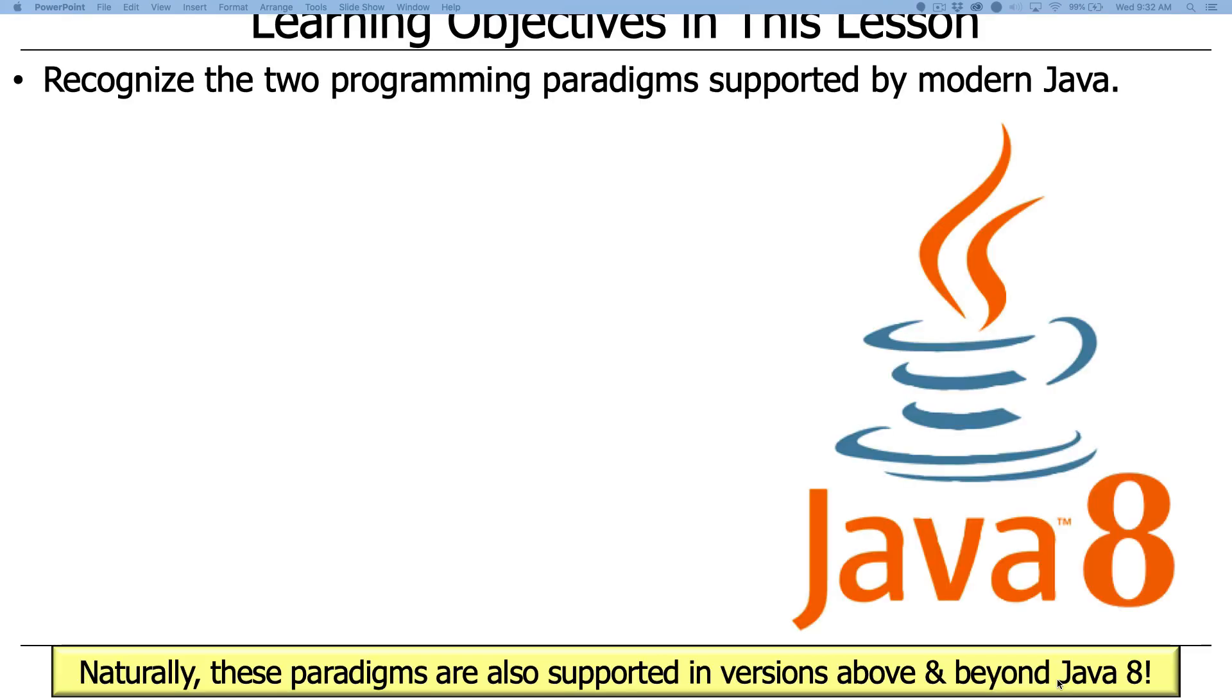We're going to start off by discussing the two primary programming paradigms that are supported by modern Java. Modern Java here means Java 8 and beyond. Java 8 came out in the 2014 time frame. I think we're now up to Java 12, which is cool, except for the fact that Android only supports Java 8 for a whole bunch of different reasons that will take too long to get into.